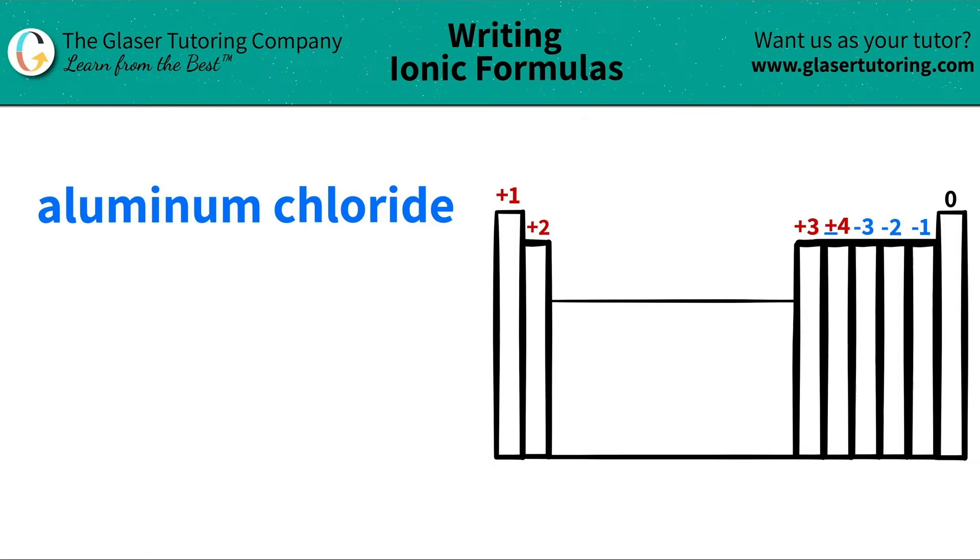Today we are going to be writing the formula for the ionic compound aluminum chloride. So let's see where these two elements are located on the periodic table and then we'll take it from there.